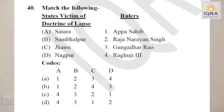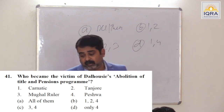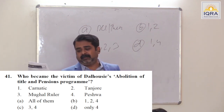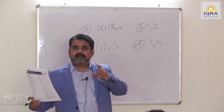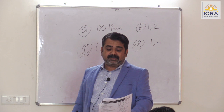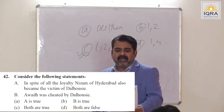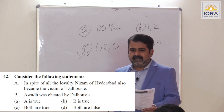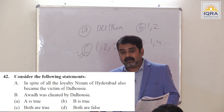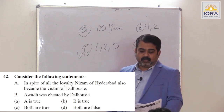The rulers who were affected due to Doctrine of Lapse — it is a factual question; you have to remember these rulers. Answer is A. Who became the victim of Dalhousie's abolition of title and pension program? Carnatic, Tanjore, Mughals, Peshwa — all of them. In spite of the loyalty of the Nizam of Hyderabad, he also became the victim of Dalhousie — true. Nizam was in debt to the East India Company, so Dalhousie took away Berar — a cotton-producing area. Awadh was cheated by Dalhousie — yes, on grounds of maladministration. Both are true. Answer is C.